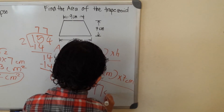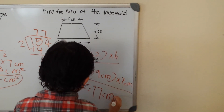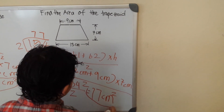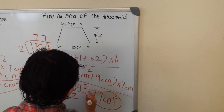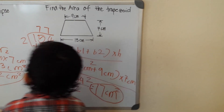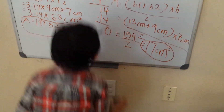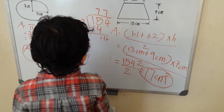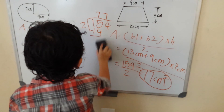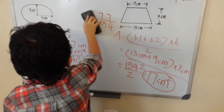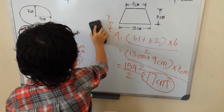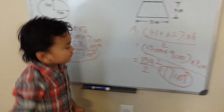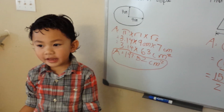So my answer is 77 cm squared. That's my area for the trapezoid. Let me erase this. Thanks for watching, have a good day.